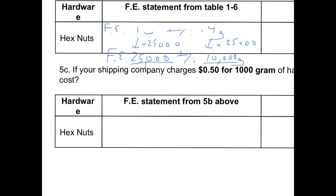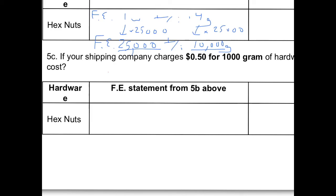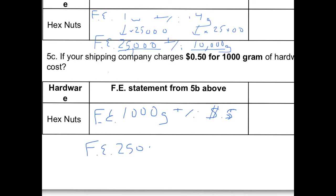The last part says the shipping company charges 50 cents per 1,000 grams. So for every 1,000 grams there is $0.50. I want it for 25,000 grams — that's times 25 — so the cost is also times 25, which comes out to $12.50.